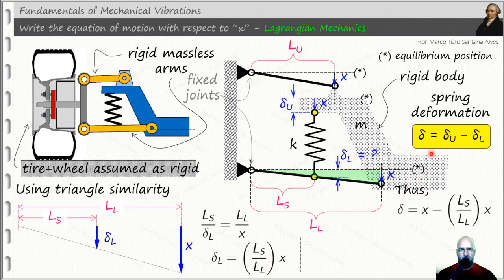The delta L is equal to Ls over LL times x. Thus, the spring deformation can be calculated, as you can see here. That's the final expression for the spring deformation here.